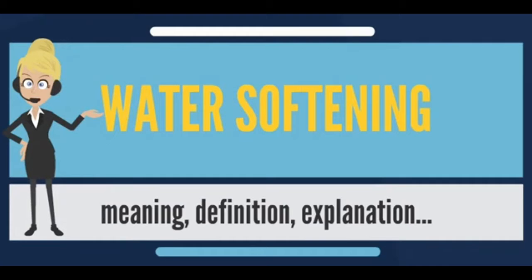Water softening is the removal of calcium, magnesium, and certain other metal cations in hard water. The resulting soft water is more compatible with soap and extends the lifetime of plumbing. Water softening is usually achieved using lime softening or ion exchange resins.